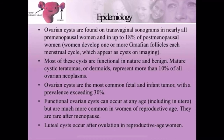Functional ovarian cysts can occur at any time, including in utero, but are much more common in women of reproductive age. They are rare after menopause because ovulation does not occur in menopausal women. Corpus luteum cysts and follicular cysts occur most commonly in the reproductive age of women. Luteal cysts occur after ovulation.